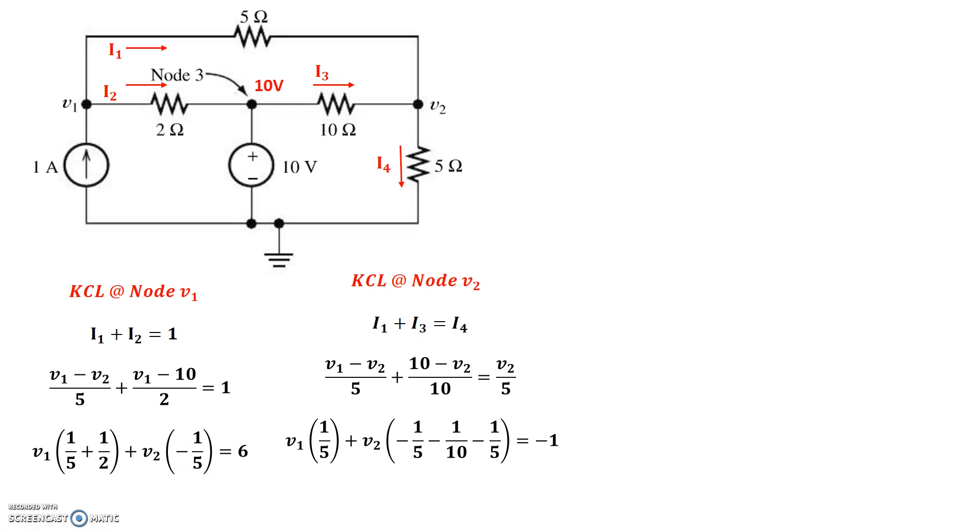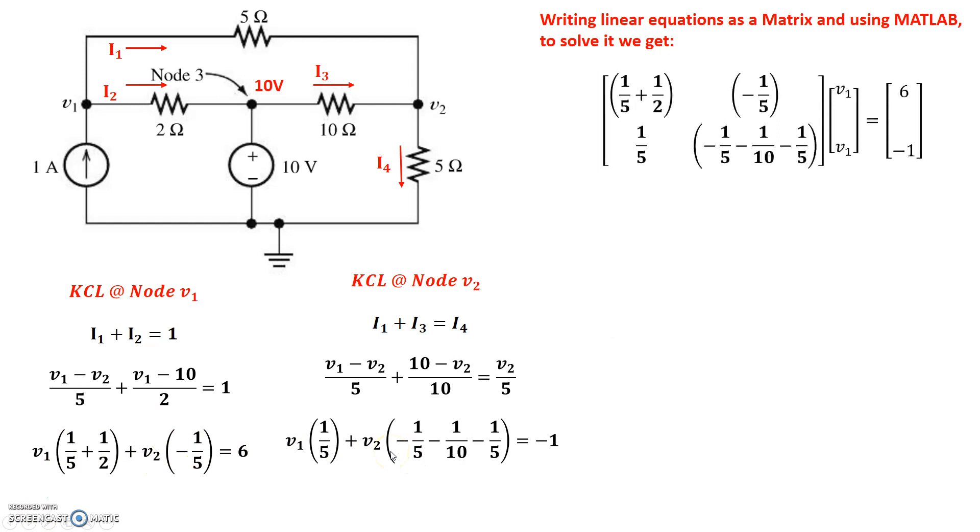Now we've been practicing writing these linear expressions as matrix multiplication and using MATLAB to solve them. So let's do that same thing again. So using these two linear expressions, let's write the matrix here. So we have the coefficient of V1 from the first expression, and the right hand side is equal to 6. Similarly, we have the coefficient of V2 from the first expression, and the right hand side is equal to 6.